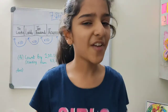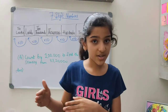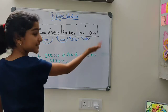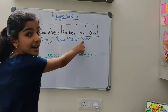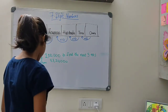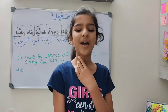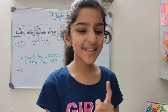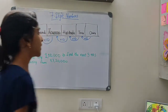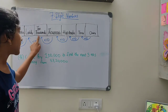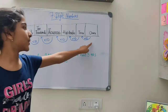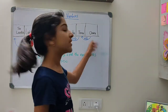Starting from 1's, each higher place is 10 times the last place. As seen in the figure: 1's, 10's, 100's, 1000's, 10,000's — and after the 10,000's comes the lakhs and the 10 lakhs. Each higher digit is 10 times the last one, multiplying by 10 as you go.